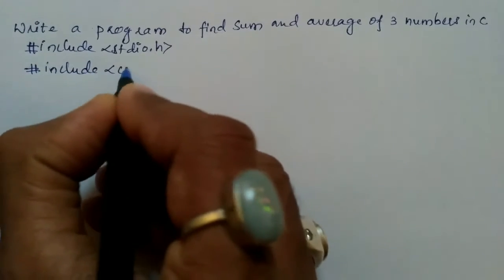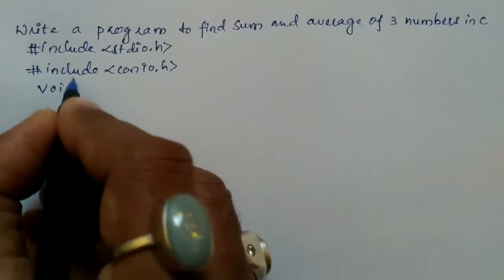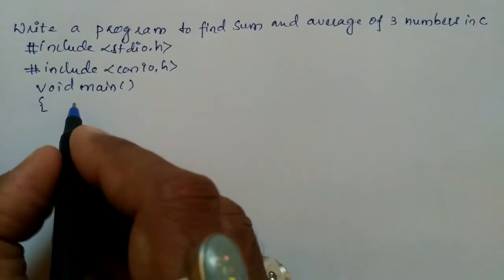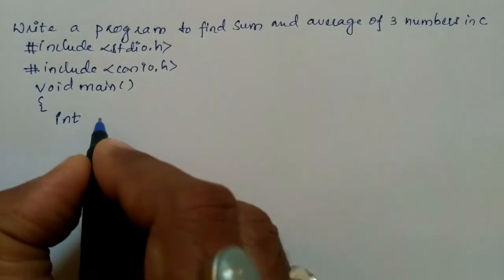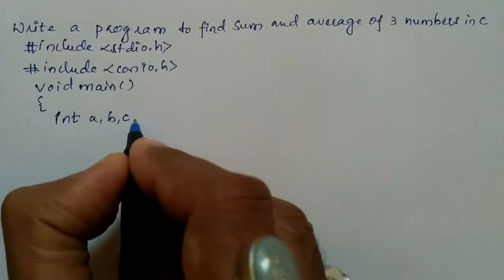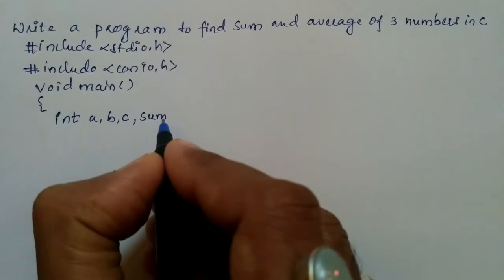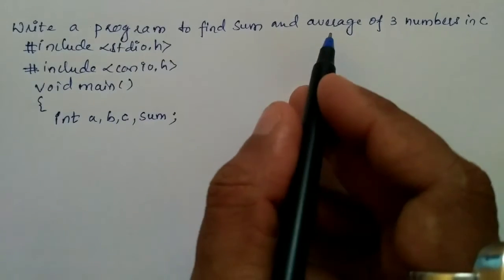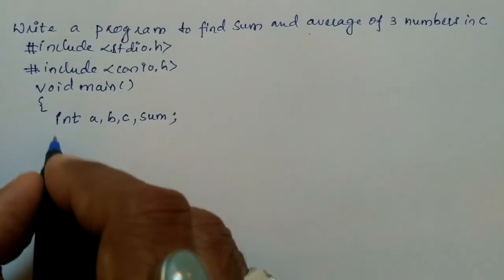<conio.h>, void main() { and here we are going to declare three variables of type integer: int a, b, c, sum; and we have to find average also for that I am going to declare one more variable of type float called average.